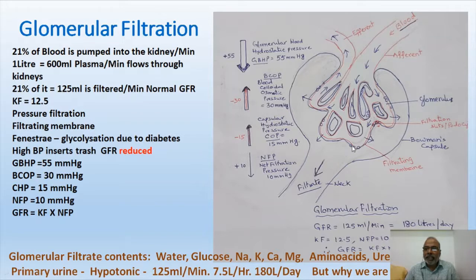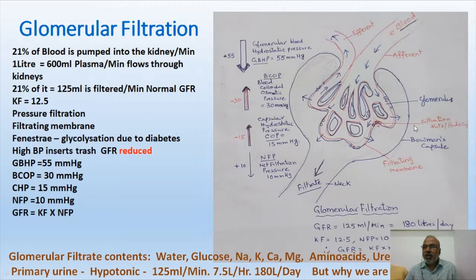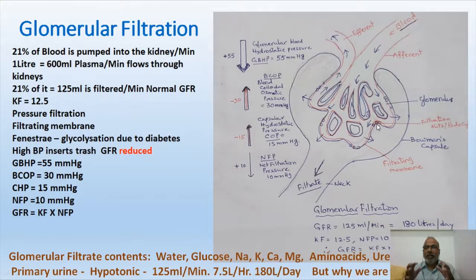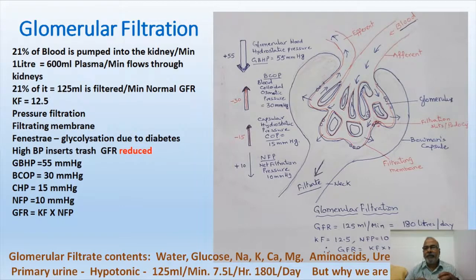The filtration membrane has certain pores. These pores in the basement membrane are formed by the podocytes and are called filtration slits — formed by podocytes which have pedicels and fenestrae. The filtration slits are crucial because they filter the entire liquid. Blood plasma gets filtered by means of these pores called filtration slits.